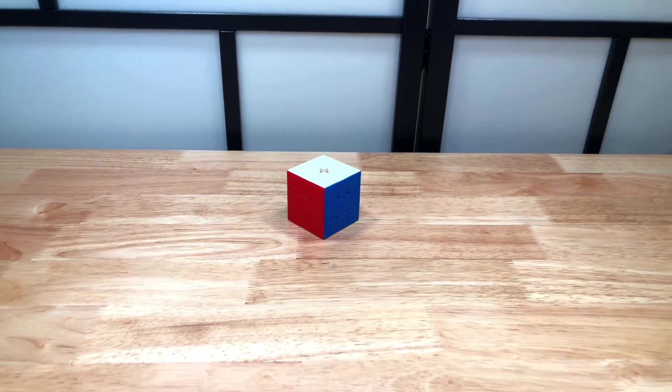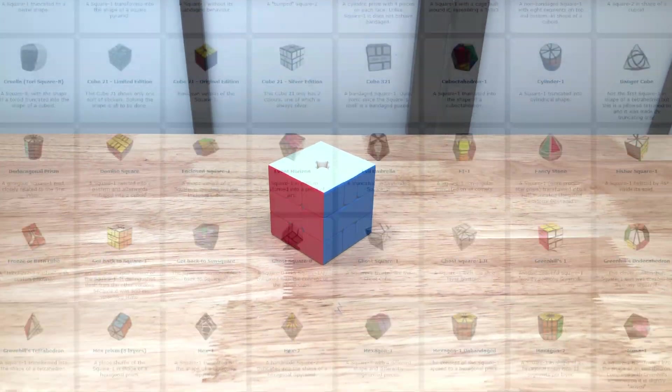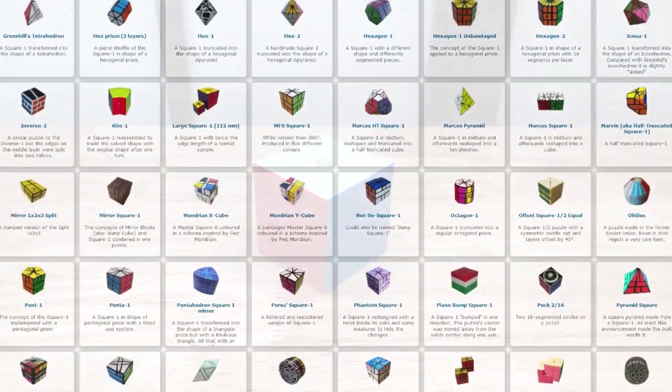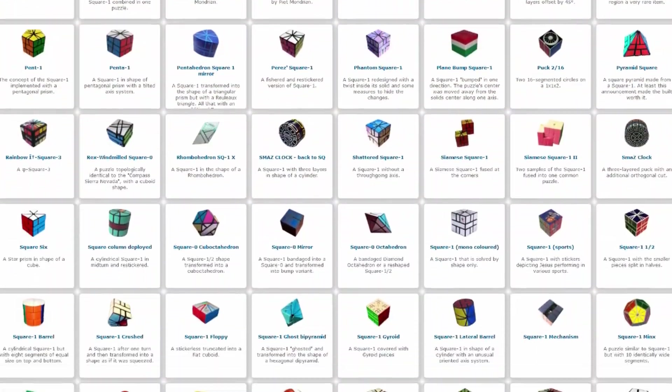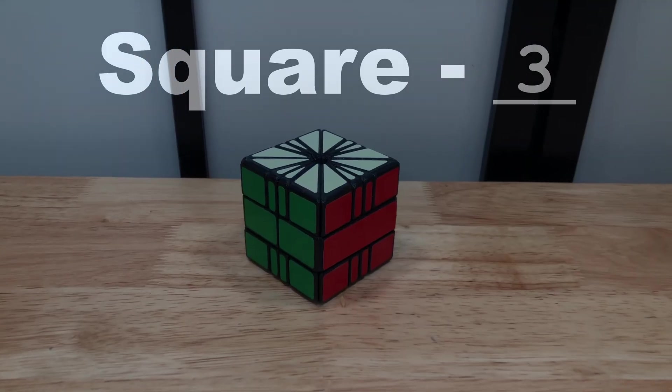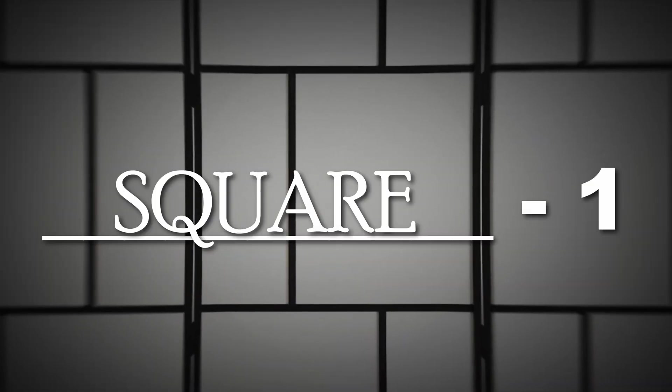Since being released in the 1990s, the Square-1 has inspired countless variations, most of them either basic shape mods or changing the number to get more slices on each layer. But there's something that's almost never been done. What if we change the square?